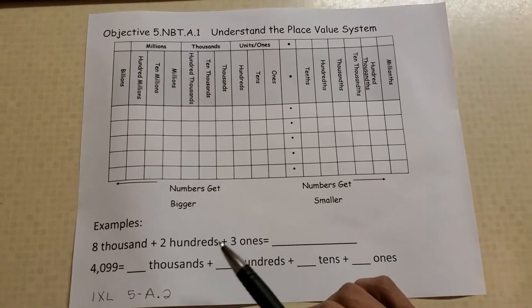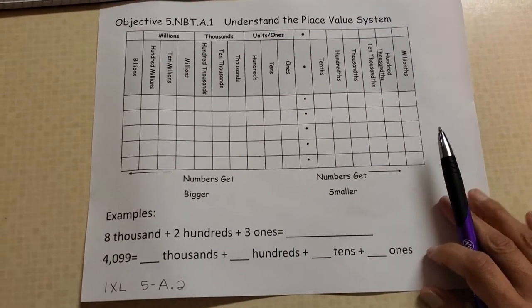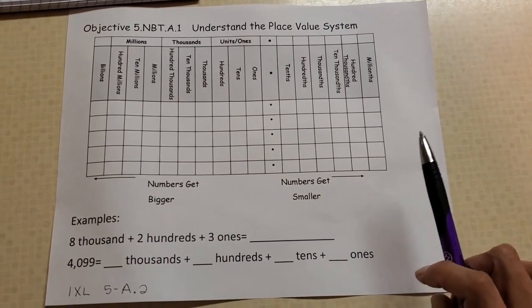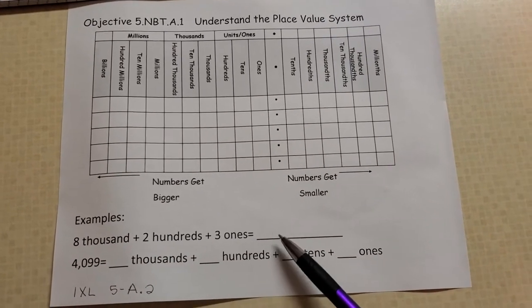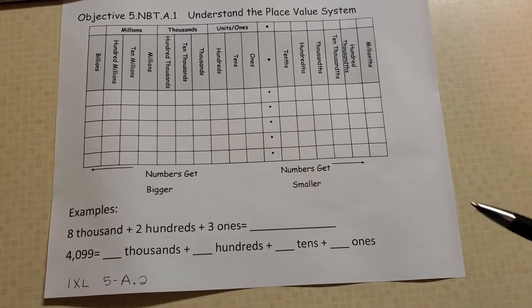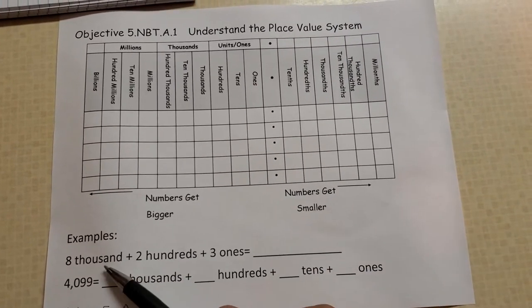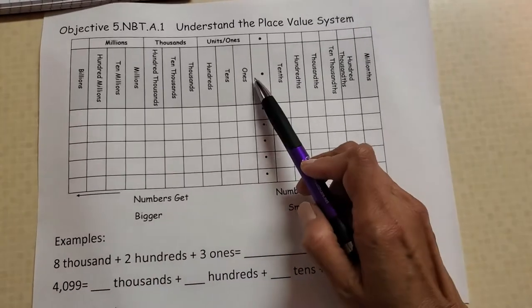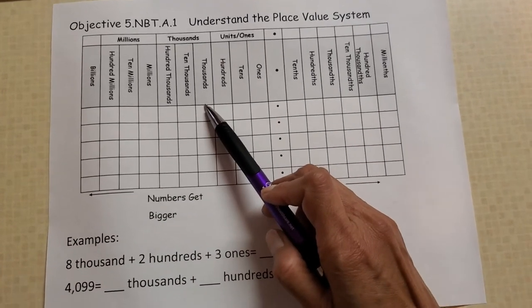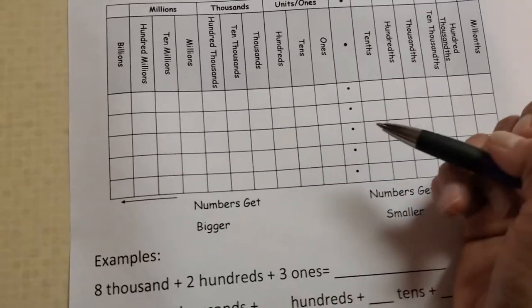Take a look here at our first example. Our example says 8 thousand plus 2 hundreds plus 3 ones - write that in standard form. So we already have the word written out for you. Eight thousand, so you look up here, you look for the thousands, and you write number 8 there.